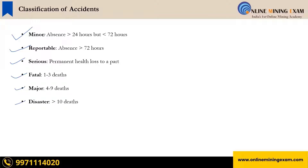The definition of minor is already written in the Act. Reportable — that is already written in the Act. Serious — that is already written in the Act, meaning there is permanent loss to a part of the body. Fatal — when 1 to 3 deaths take place, it is called fatal.